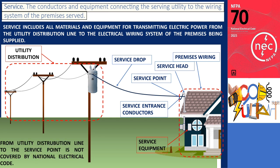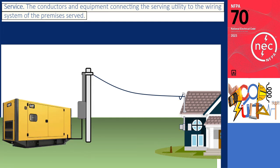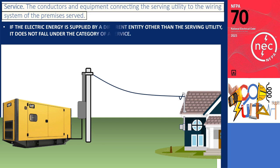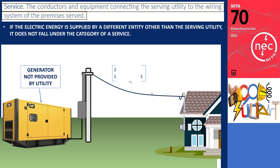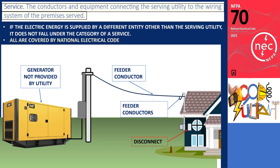However, if the electric energy is supplied by a different entity other than the serving utility, it does not fall under the category of a service. In such cases, the installation would consist of one or more feeders and building disconnects, which are regulated by the NEC.